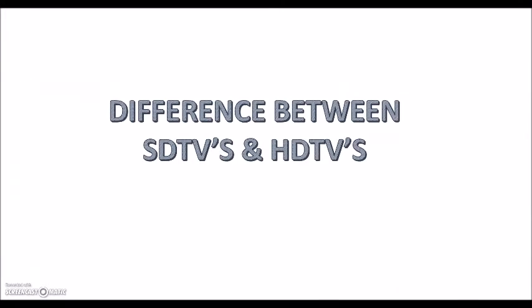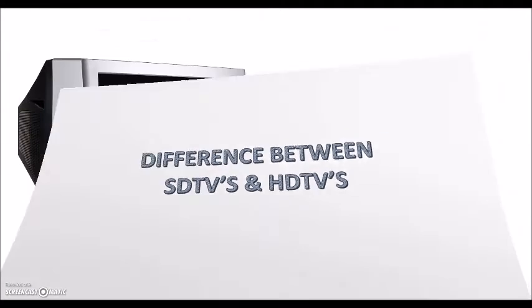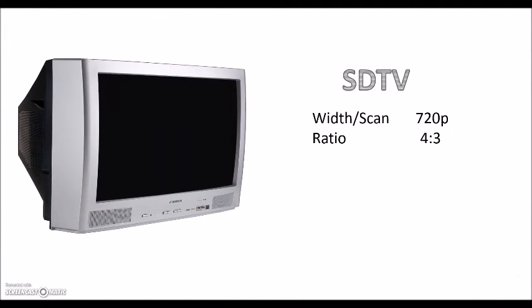First, I am going to talk about SDTV. SDTV is the same as analog television but transmitted digitally so that there is no signal loss regardless of distance. Standard definition television is a television system that uses a resolution not considered to be either high definition or enhanced definition television. Commonly it is offered at 720 pixels and a ratio of 4:3.